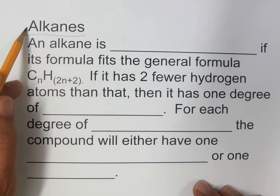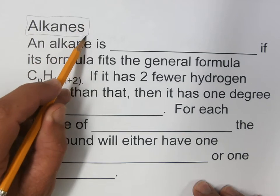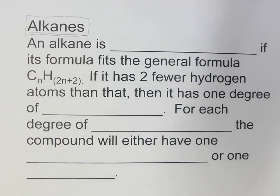Alkanes are simple, unreactive hydrocarbons. Of course, you can burn them, and under other extreme conditions they will undergo reactions, but they're pretty much unreactive. An alkane is a hydrocarbon that has single bonds.